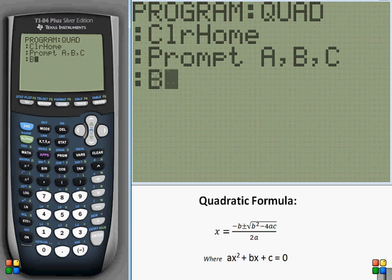So we take B, square it, subtract 4AC, 4 times A times C, and store it as D.